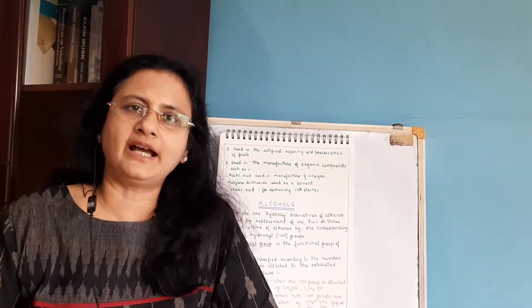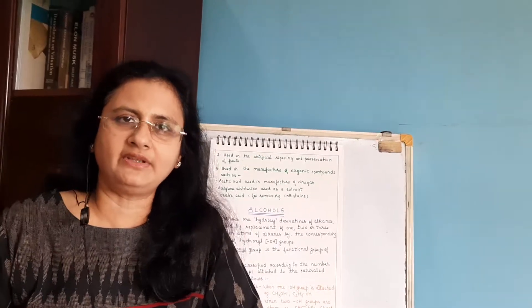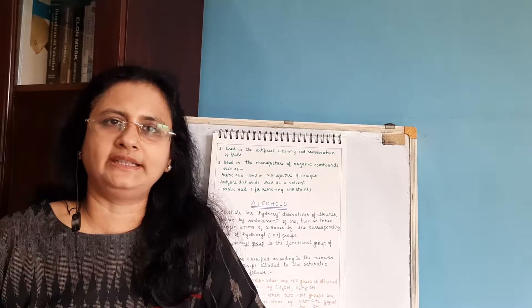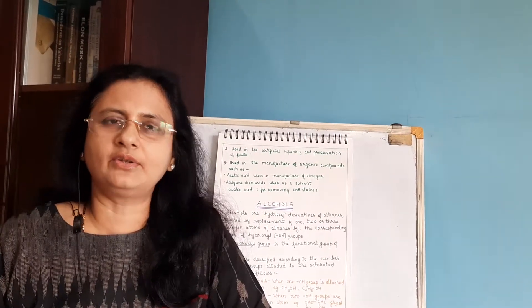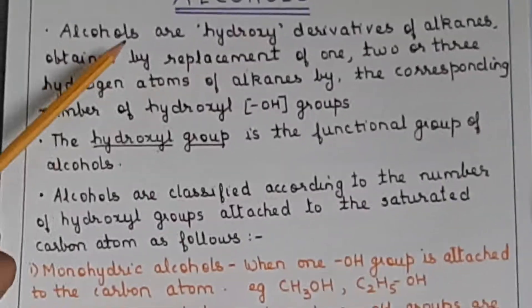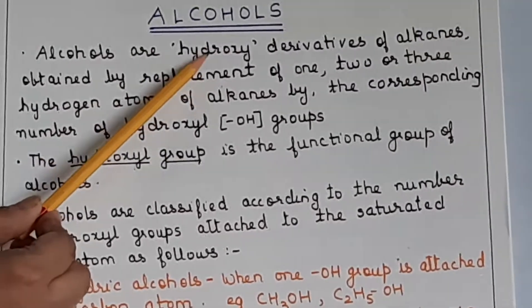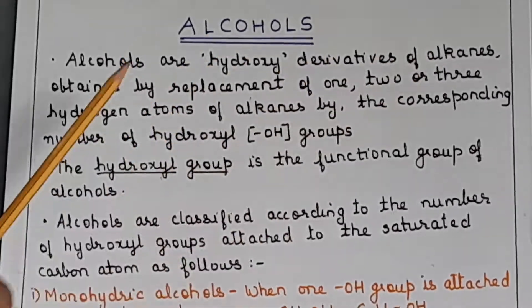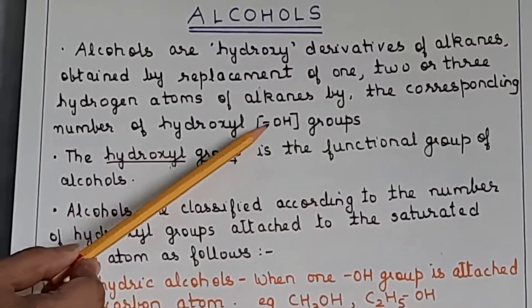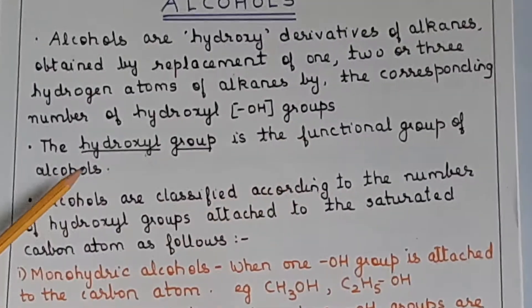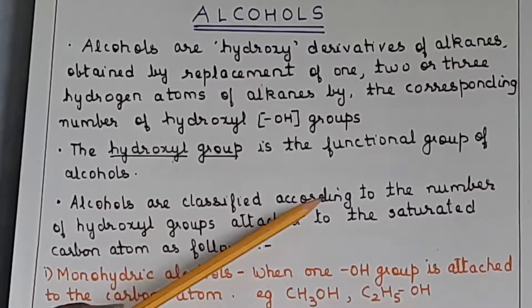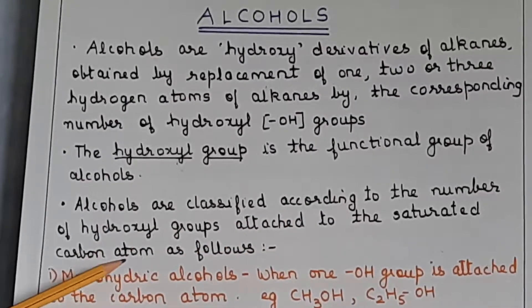Then you have dihydric alcohols — di means 2, so it will have 2 OH groups in its structure. Trihydric will naturally have 3 OH groups in its structure. We are going to study only the monohydric alcohols: methanol, ethanol, propanol and so on. Alcohols are the hydroxy derivatives of alkanes, obtained by replacement of 1, 2, or 3 hydrogen atoms by the corresponding number of hydroxyl groups. The hydroxyl group is the functional group of alcohol. They are classified according to the number of hydroxyl groups attached to the saturated carbon atom.